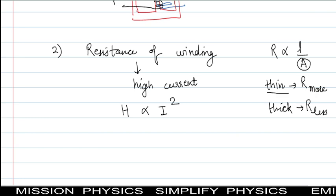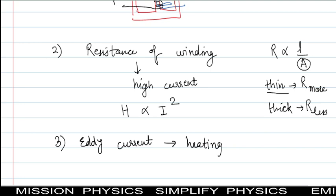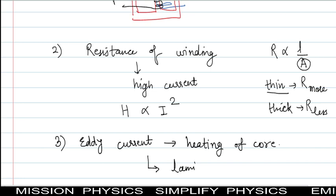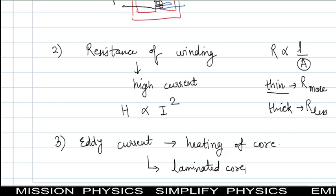The third loss is due to eddy currents. When a metal block is placed in a changing magnetic field, eddy currents are produced. Due to eddy currents, heating of the iron core takes place, which is a loss of energy. To minimize this, we should use a laminated core. This is a one or two mark question in both state board and CBSE board: why do we use a laminated core in the transformer? The answer: to minimize energy losses due to eddy currents.